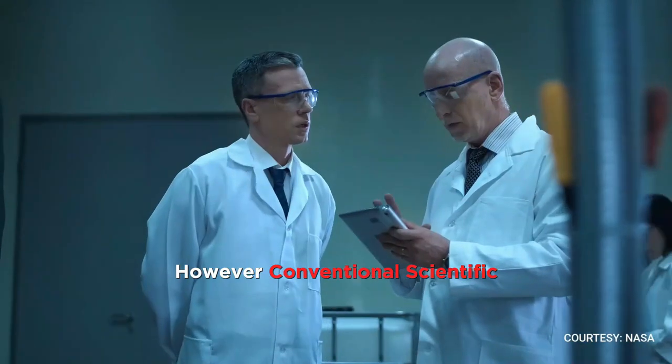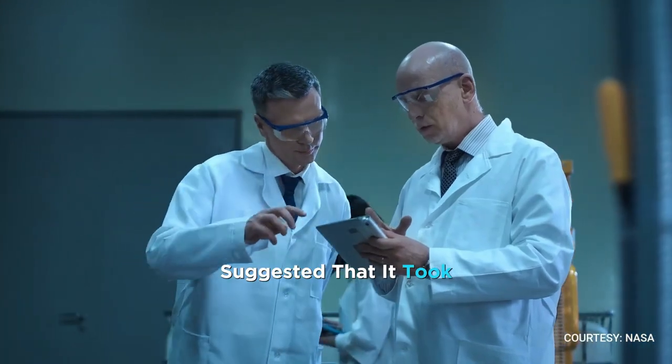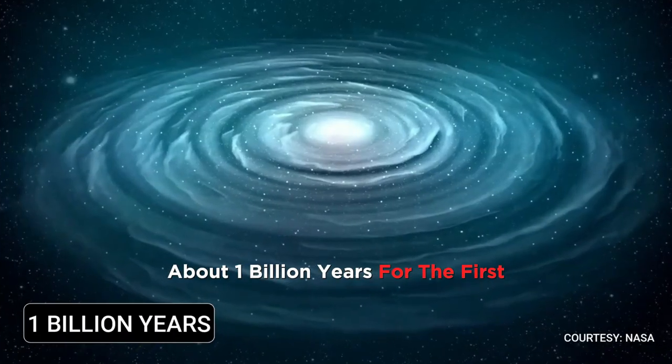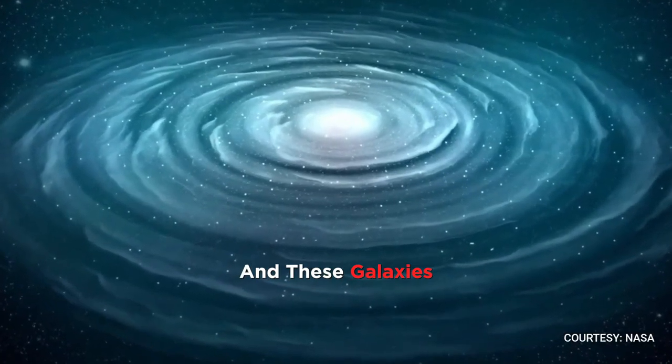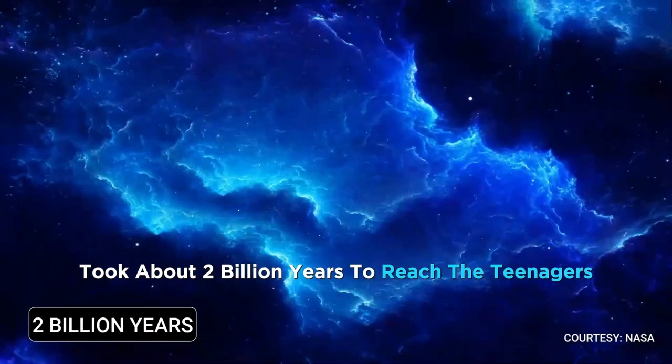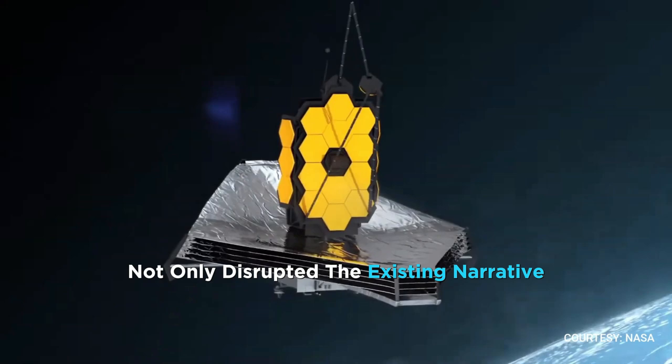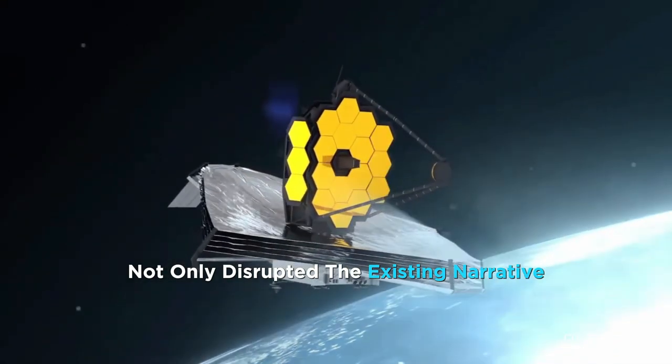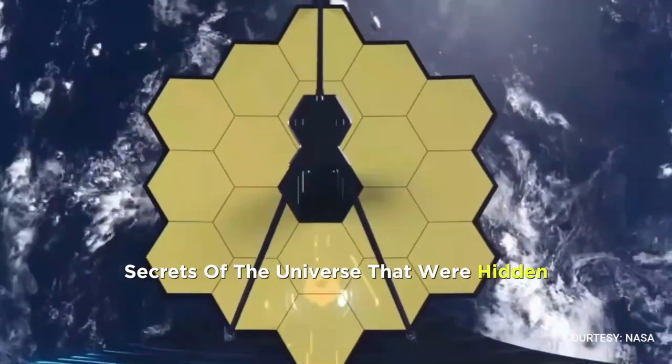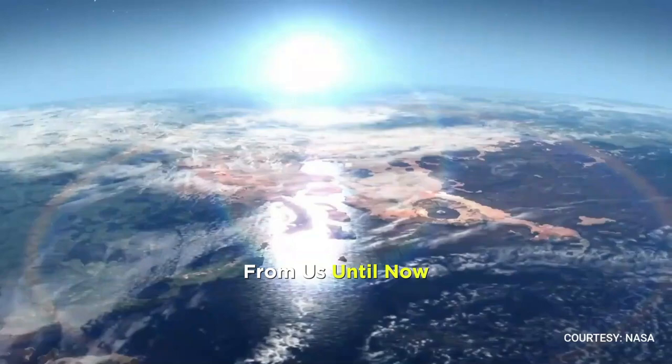However, conventional scientific understanding suggested that it took about 1 billion years for the first galaxy to form, and these galaxies took about 2 billion years to reach their teen ages. James Webb, in capturing this knowledge, not only disrupted the existing narrative, but also unveiled secrets of the universe that were hidden from us until now.